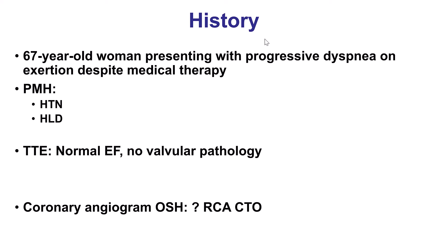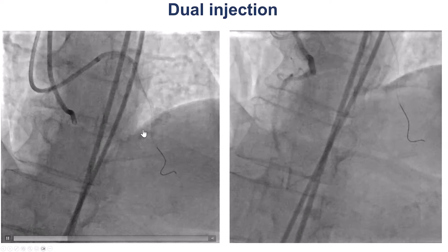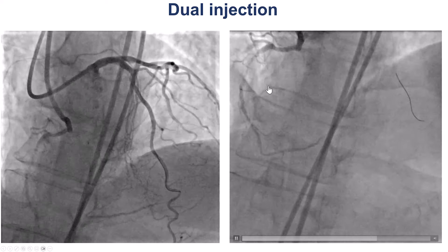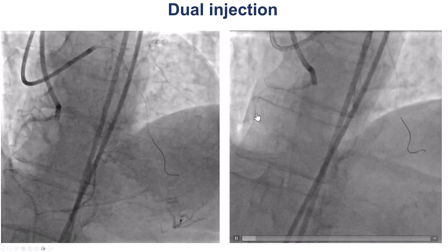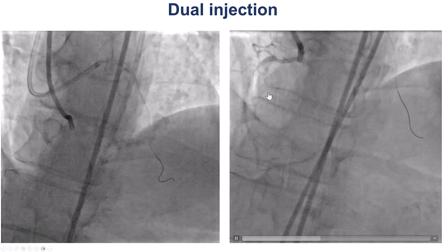The patient was a woman that presented with progressive dyspnea on exertion. She had a normal ejection fraction and was found to have a high-grade lesion called a CTO on the right coronary artery. However, upon review of the angiogram, one might say that there is actually some flow through that lesion, so it may not actually be a CTO.